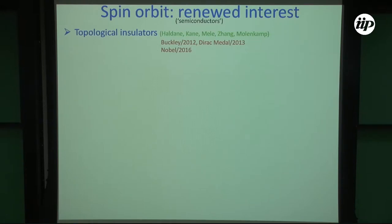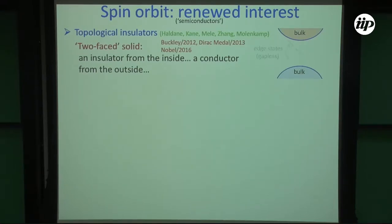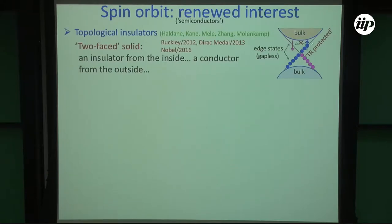One is the so-called topological insulators — essentially a solid which has some identity problem. It doesn't quite know whether it's a metal or an insulator. Superficially it's a metal, and deep inside it's an insulator. So it's a two-phase solid: it has a bulk gap, but on the edges it has linearly dispersing bands. They are protected and gapless, so it's a metal on the surface. Because of spin-momentum locking, you cannot really flip — once you produce right-moving carriers with spin up, they cannot flip to the other side unless you break time-reversal symmetry by having a magnetic impurity or magnetic field.